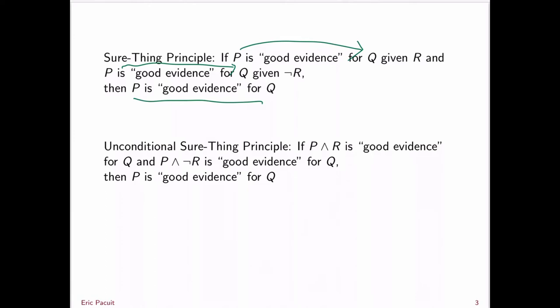The unconditional Sure Thing Principle says: if P and R is good evidence for Q, and P and not-R is good evidence for Q, then P is good evidence for Q. Now, of course, whether or not these principles hold is going to depend on what we mean by good evidence — are we talking about evidential support or positive relevance?